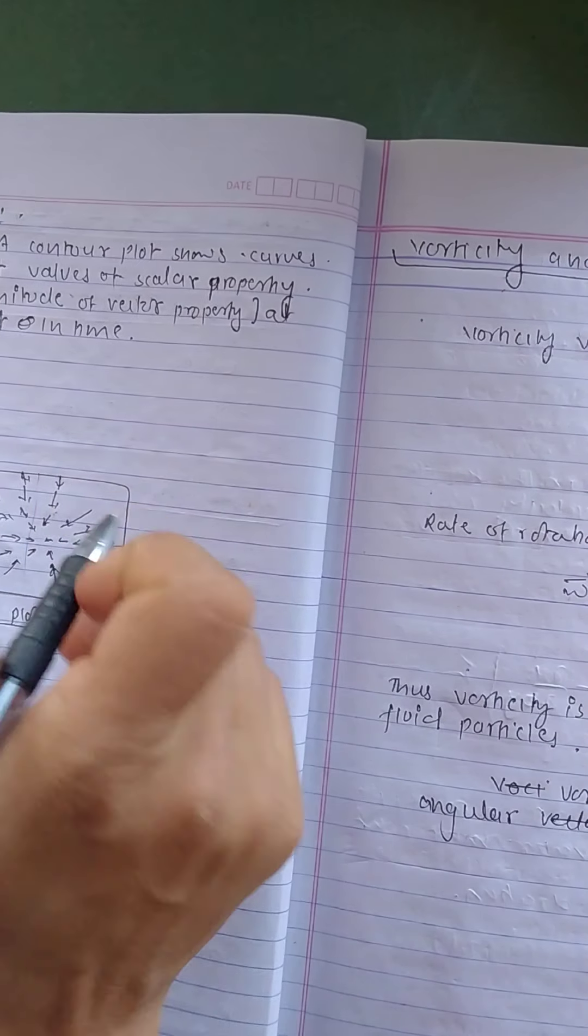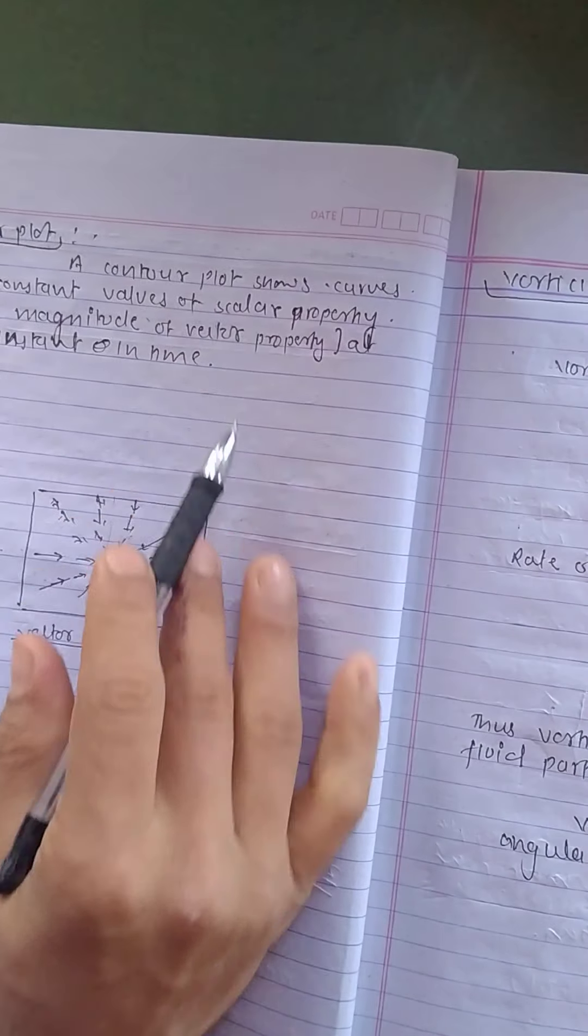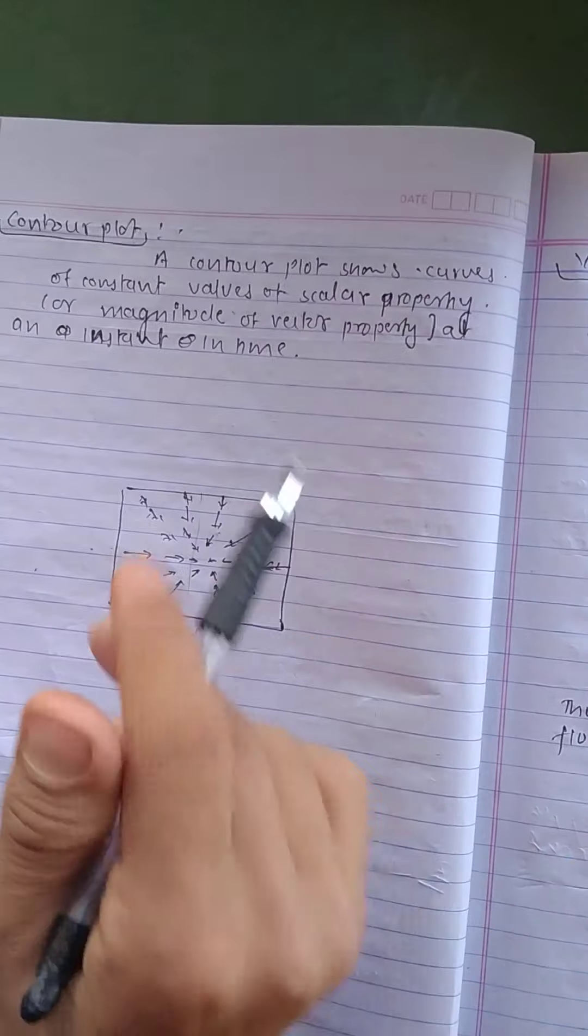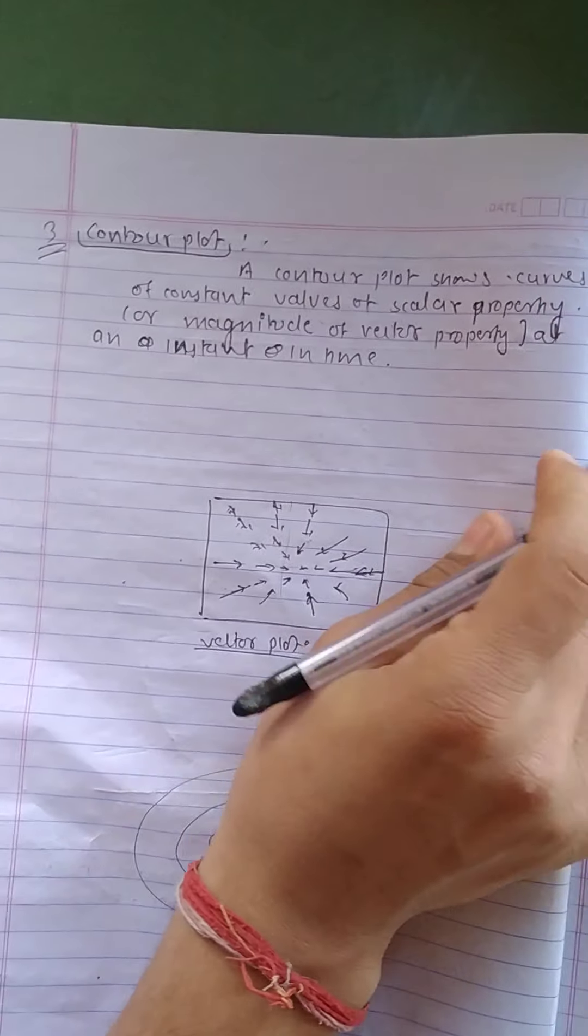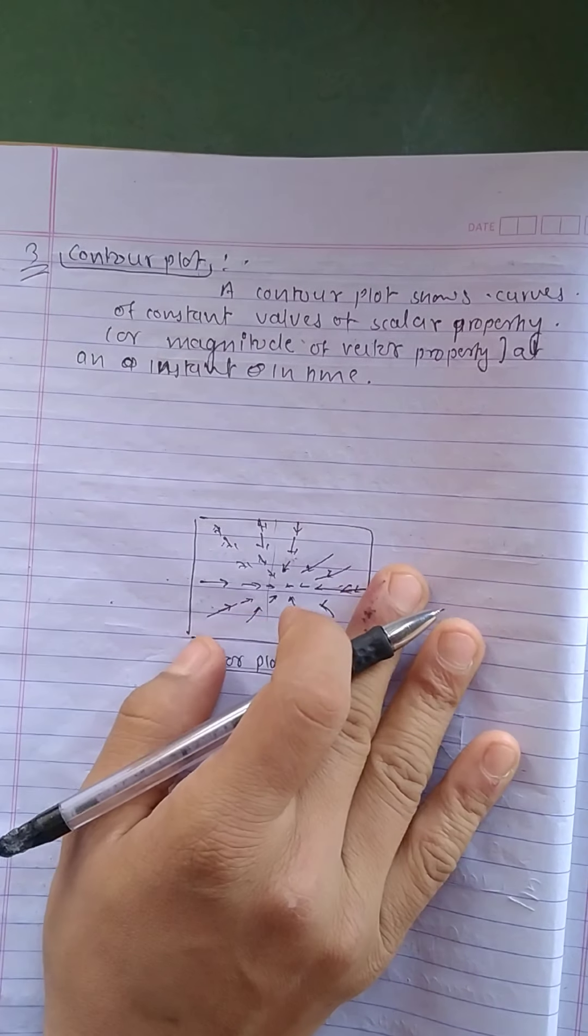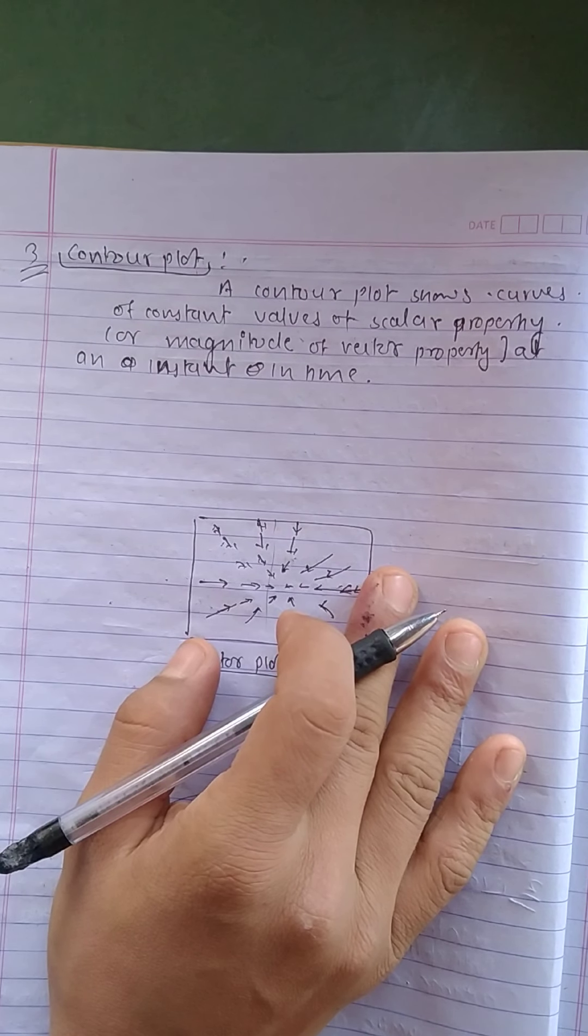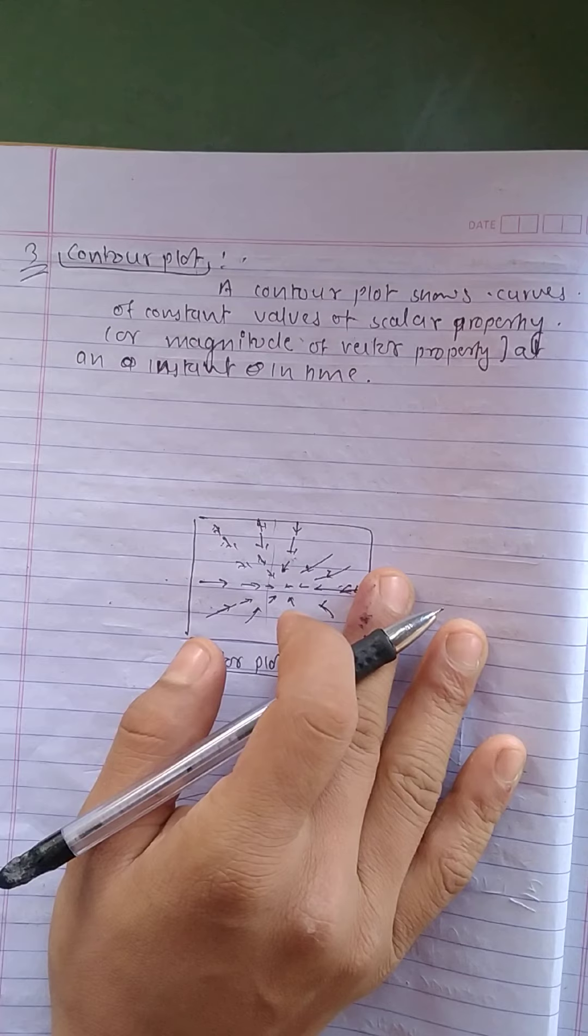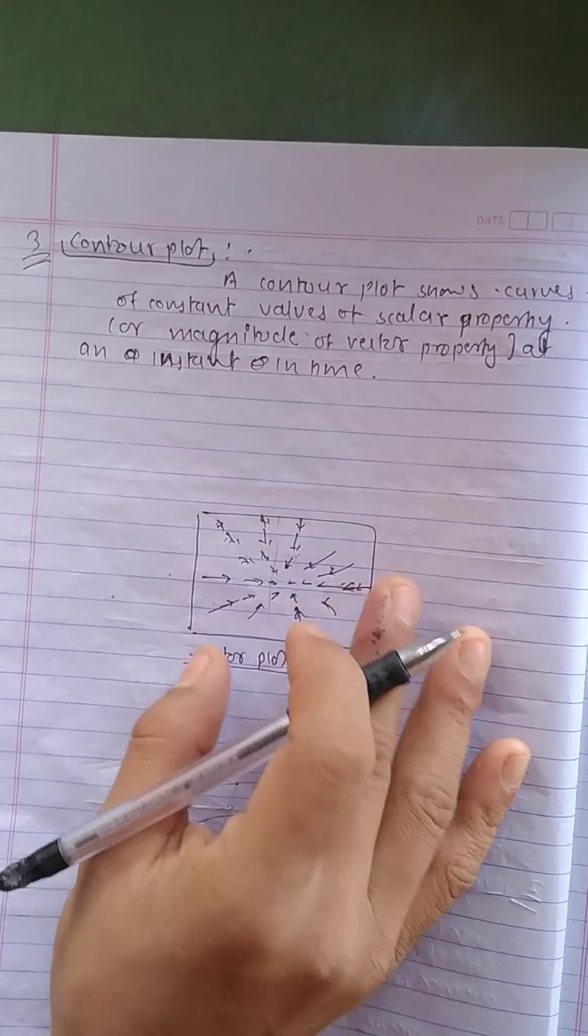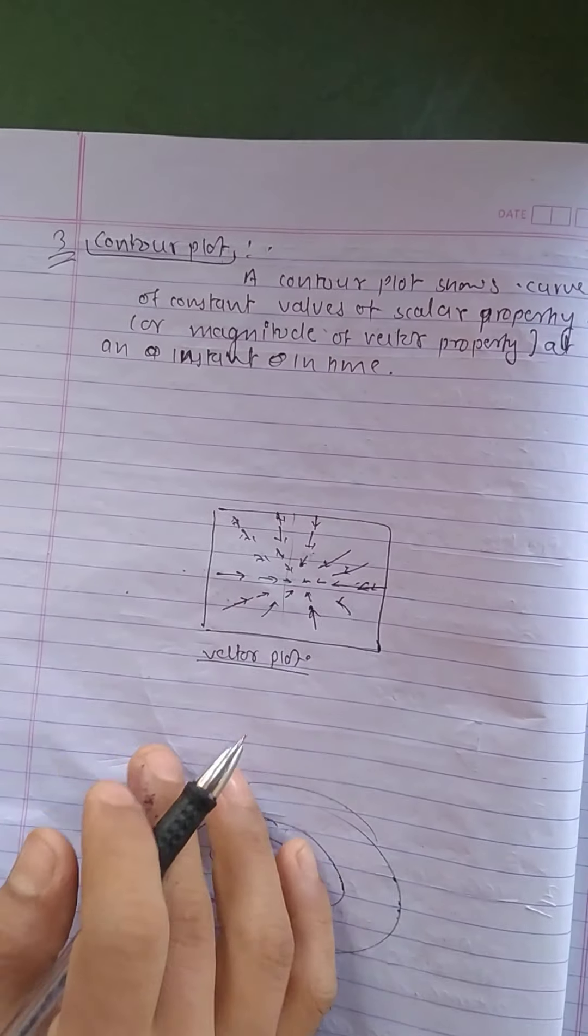Now what is contour plot? A contour plot shows curves of constant values of scalar property or magnitude of vector property at an instant in time.